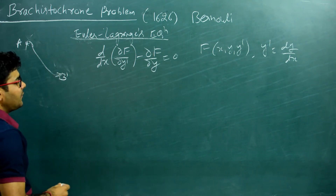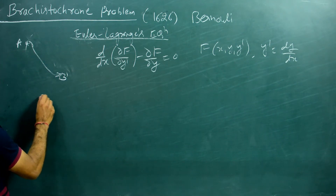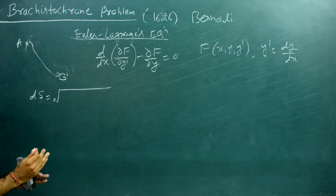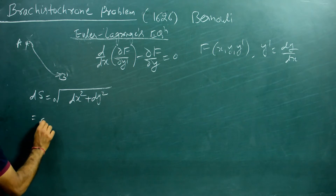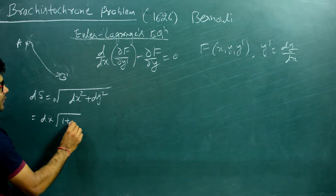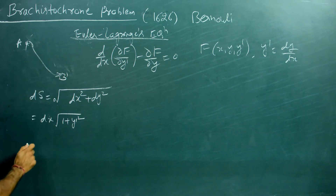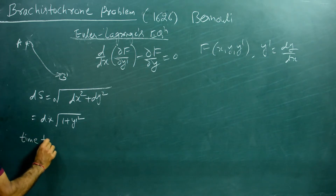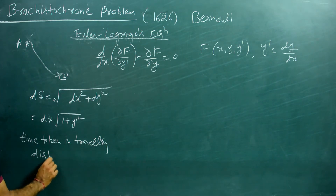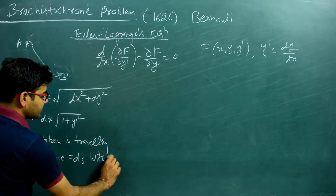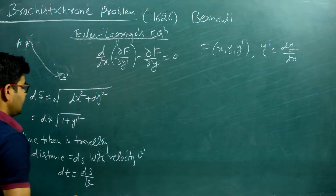We'll use this equation to solve this problem. First of all, we have to calculate the time taken in coming from point A to point B. For that, we know that the distance between two infinitesimally close points is ds = √(dx² + dy²) = dx√(1 + y'²). The time taken from A to B: we find dt = ds/V.